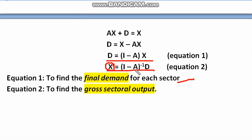If the input coefficient matrix and the final demand are given, take I − A using the identity matrix of the same order as A. If A is 2×2, use a 2×2 identity matrix; if A is 3×3, use a 3×3 identity matrix. Then take the inverse of (I − A) and multiply it by d to get the gross output for the various sectors of the economy. That's all for today, thank you.